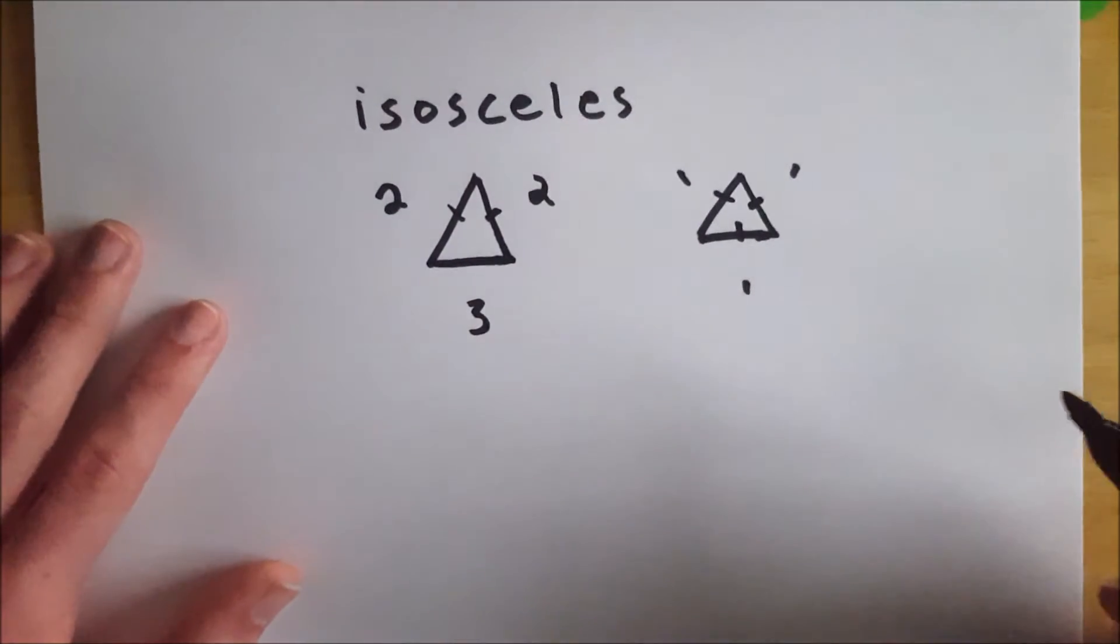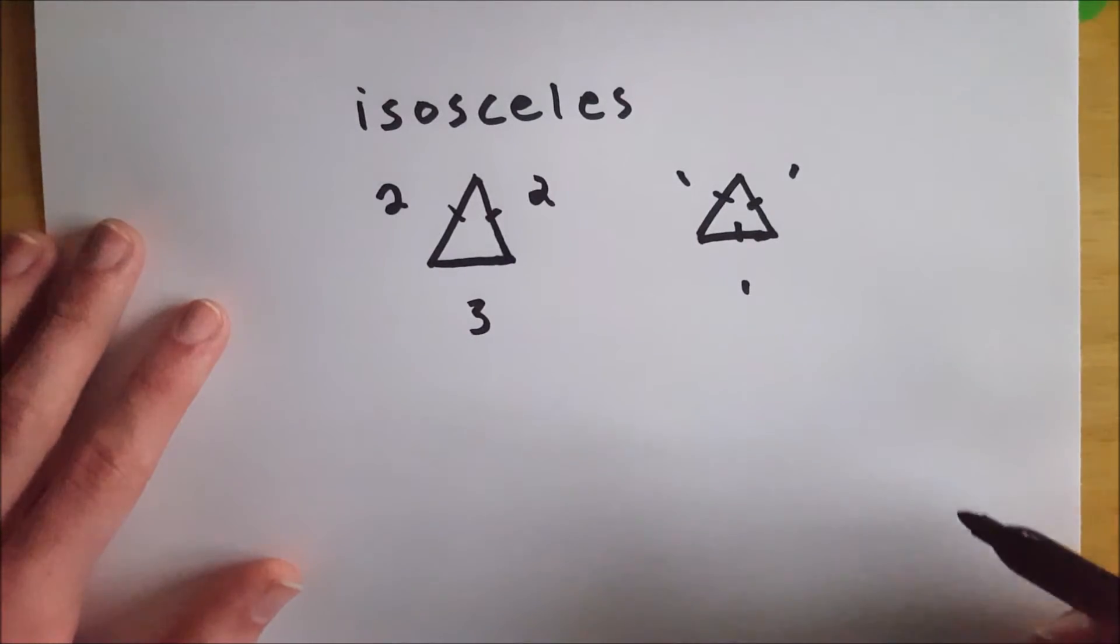This is a special case of isosceles triangle, where all three sides are congruent. And then of course, it's therefore an equilateral triangle, but it is also an isosceles triangle.